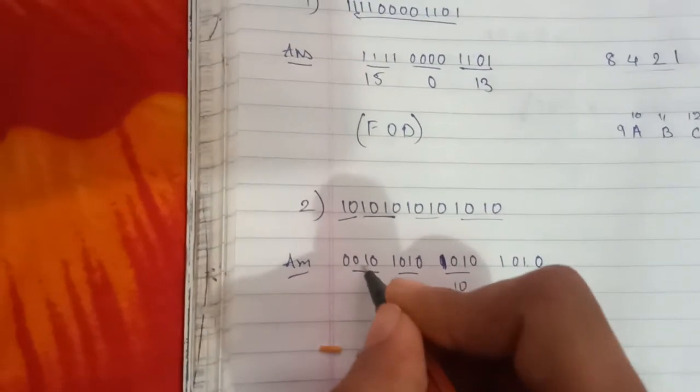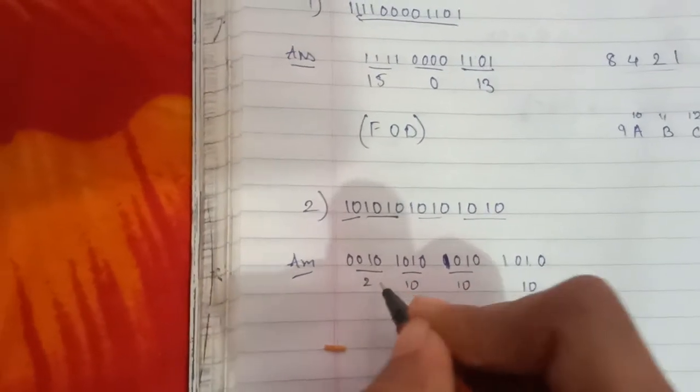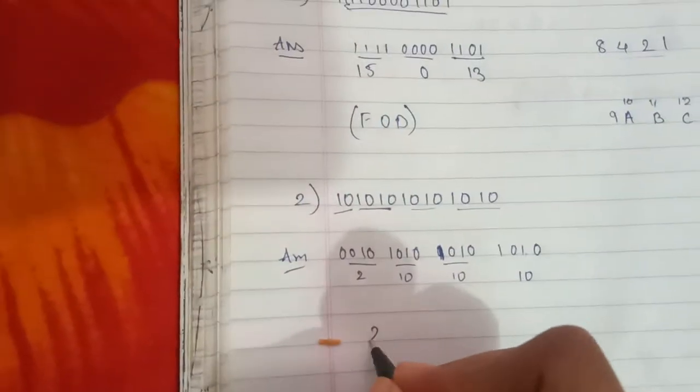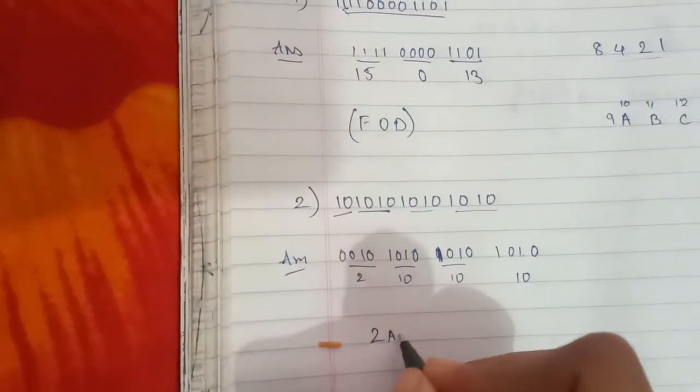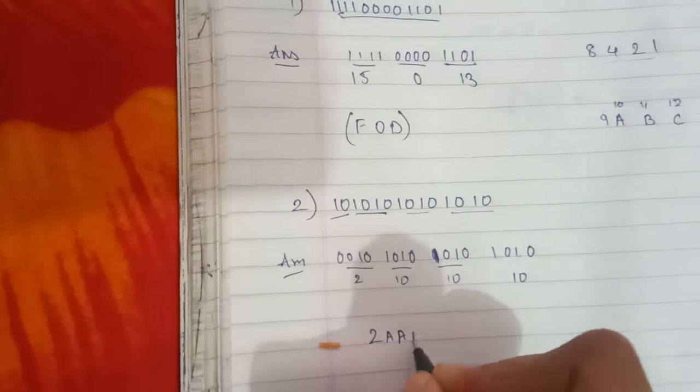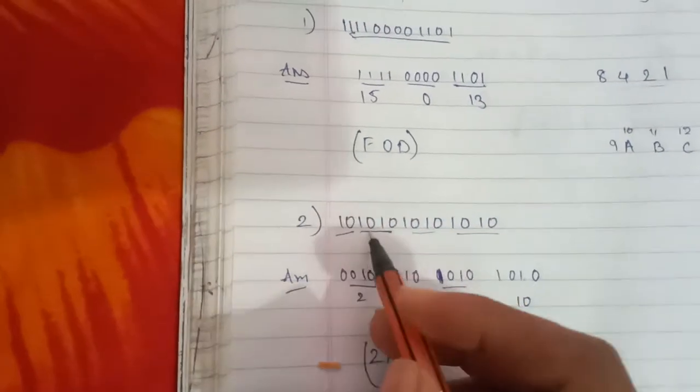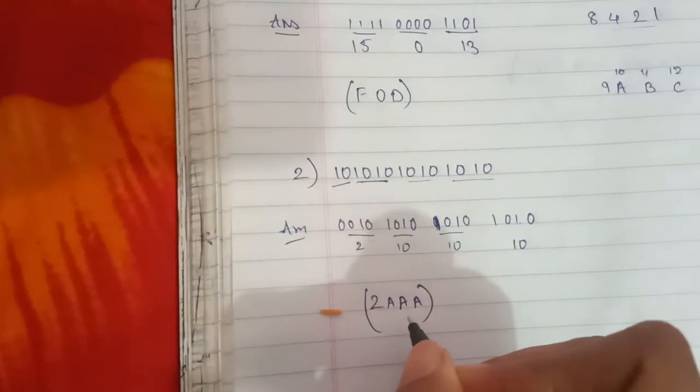Since 1, 2, and 4 gives 2 for one group, and 10 is written as A in hexadecimal, we get A, A, and A for those groups. So the binary number in hexadecimal is 2AA. I hope you understand from these two examples how to convert a binary number to hexadecimal.